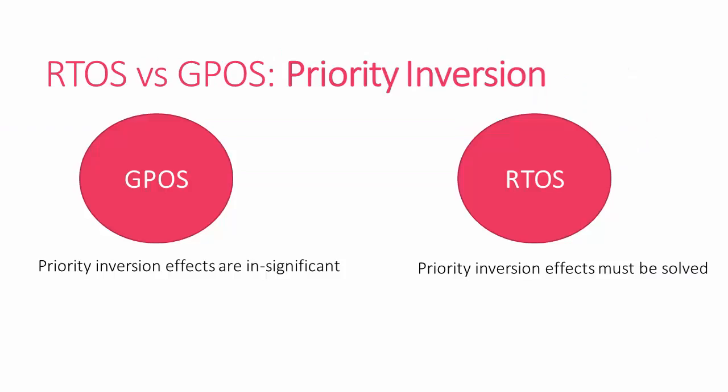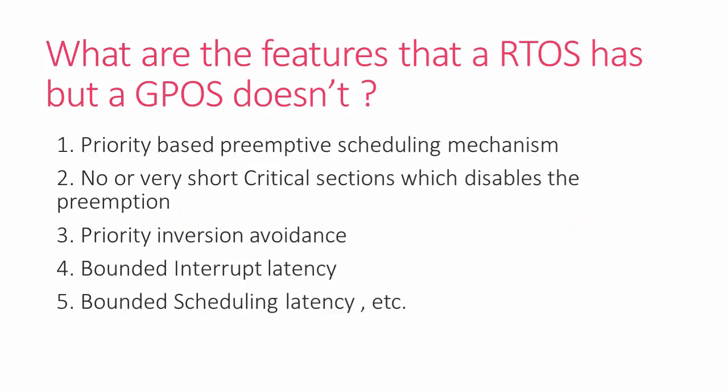Priority inversion is not a problem in a general purpose OS, but it will surely cause problems in a real-time operating system. Now, what are the features that RTOS has but a GPOS doesn't? The first point I would like to mention...